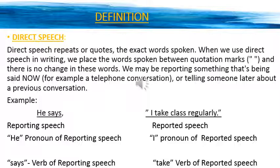In English language there are actually two ways to narrate the spoken words of a person: direct speech and indirect speech. In direct speech, the actual words of the speaker with no change are quoted exactly as they are, without making any change. These exact words of the speaker are enclosed in inverted commas, and there is always a comma after 'said' that introduces the spoken words. For example: He says, "I take class regularly."